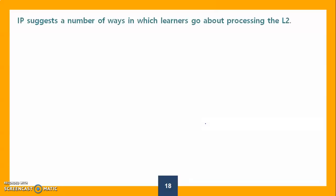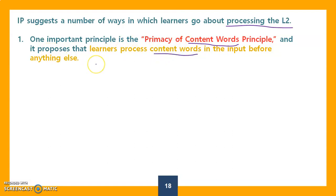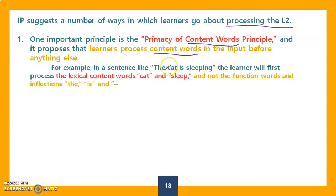Input processing suggests a number of ways learners go about processing. There are two principles VanPatten talked about. Number one is the primacy of content words principle. Learners process content words before anything else. For example, in a sentence like 'the cat is sleeping,' a learner will notice 'cat' and 'sleep' and understand that the cat is sleeping, but they will not focus on the function words like 'the,' 'is,' and '-ing.'